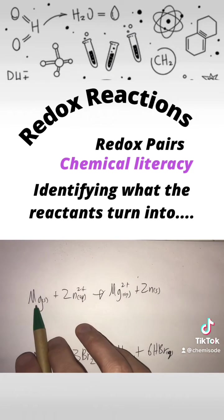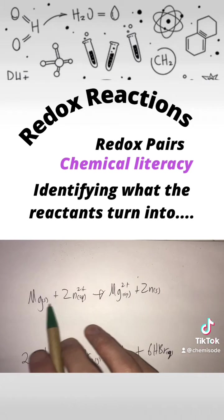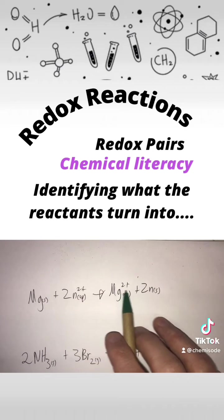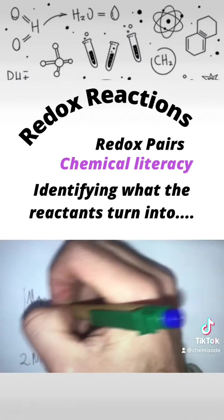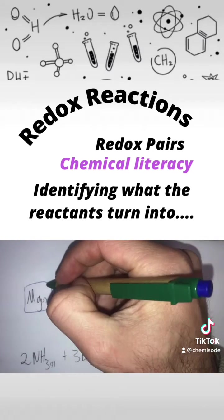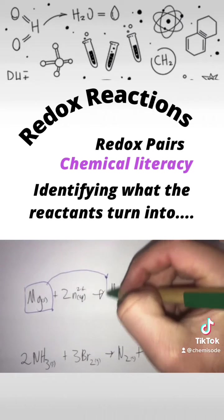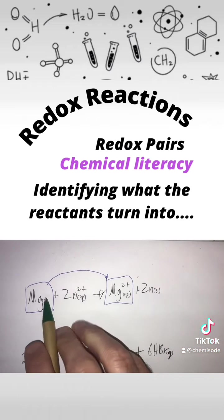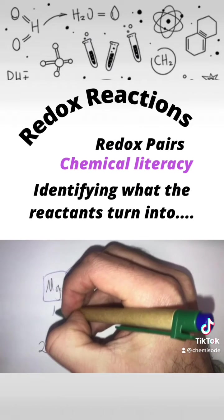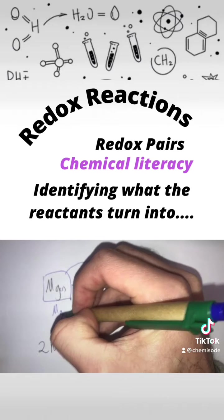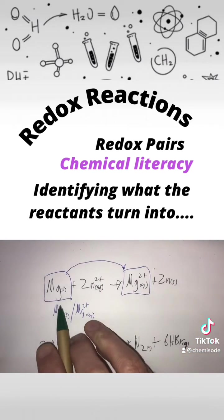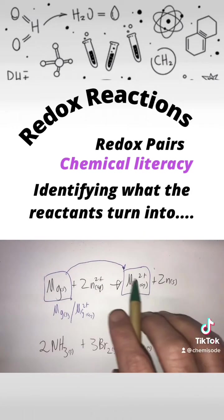In our first reaction, we've got magnesium solid reacting with zinc ions, forming magnesium ions and zinc solid. Our magnesium here is turning into our magnesium ions — you can see that's what's happening to this atom. So that's one of our redox pairs: Mg solid and Mg²⁺. It's what we have as our reactant turning into our product.